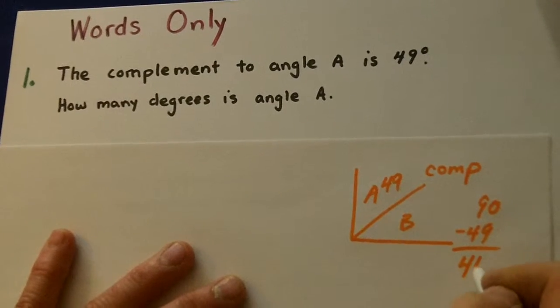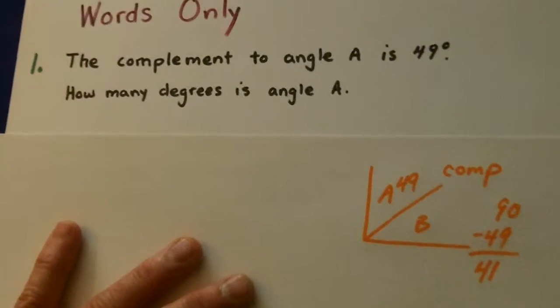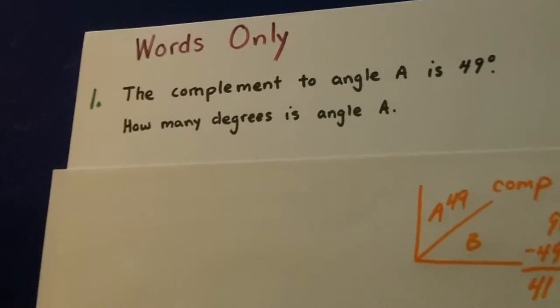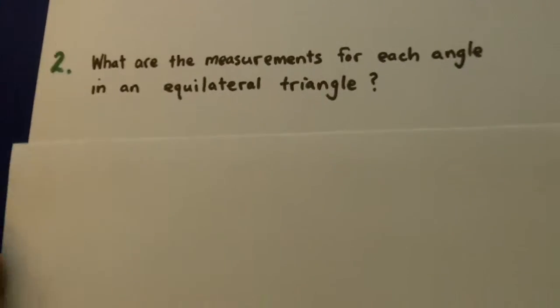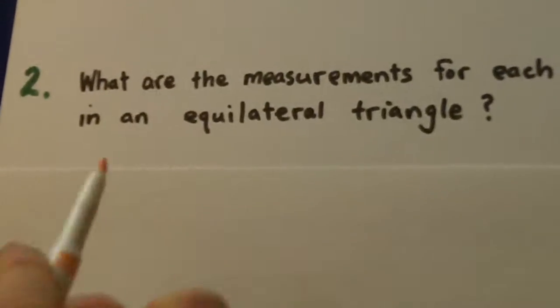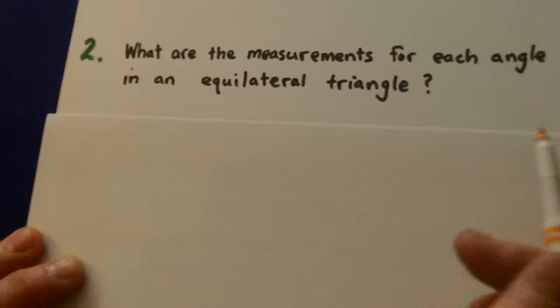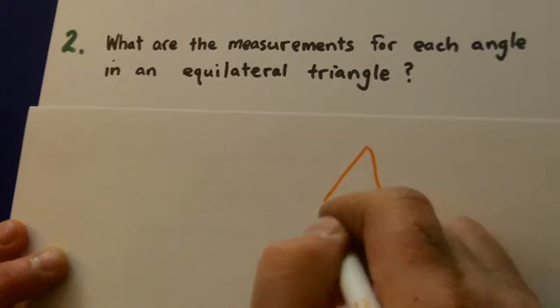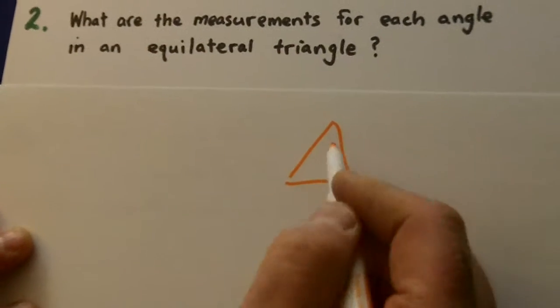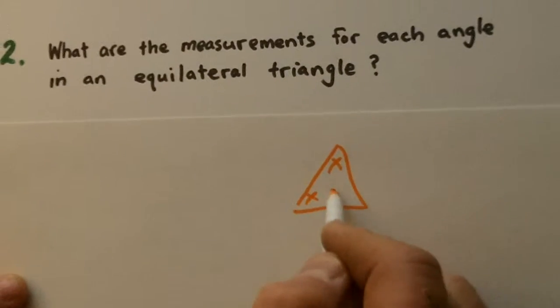Okay, that isn't very hard. Now let's go to two. What are the measurements for each angle in an equilateral triangle? Now an equilateral triangle, we could draw it, each one of these are the same.